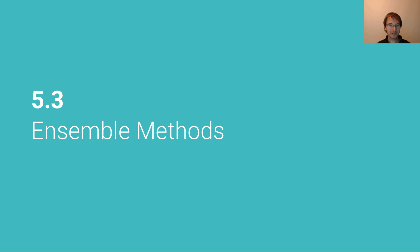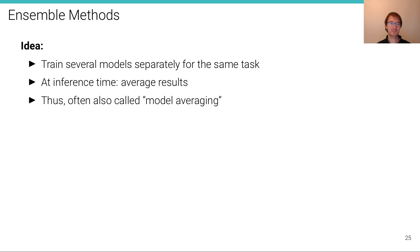Another way of improving generalization is to use an ensemble of models. The idea here is to train several models separately for the same task and then at inference time to average the results. Therefore, this technique of method ensembles is often also called model averaging.